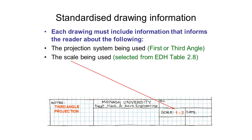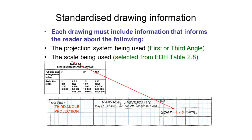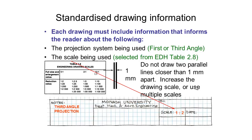Next we need to indicate what scale we're using. There are only certain scales which comply with Australian standards, as listed in the table. A 1:2 ratio means we're drawing at half size, a 1:1 ratio means we're drawing at full scale, and a 2:1 ratio means we have doubled the size of the object. In our drawing we do not want to draw two parallel lines closer than one millimeter apart, so if two lines are actually measured at closer than one millimeter we need to increase the scale to separate them.